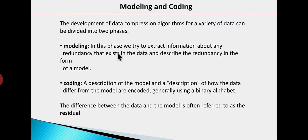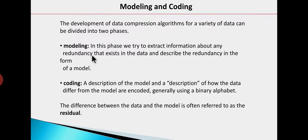In the modeling phase, we try to extract information about any redundancy that exists in data and describe the redundancy in the form of a model. In the modeling phase, we have to identify the redundancy — duplication of information. Such data is called redundant data, and this redundancy will waste our memory.